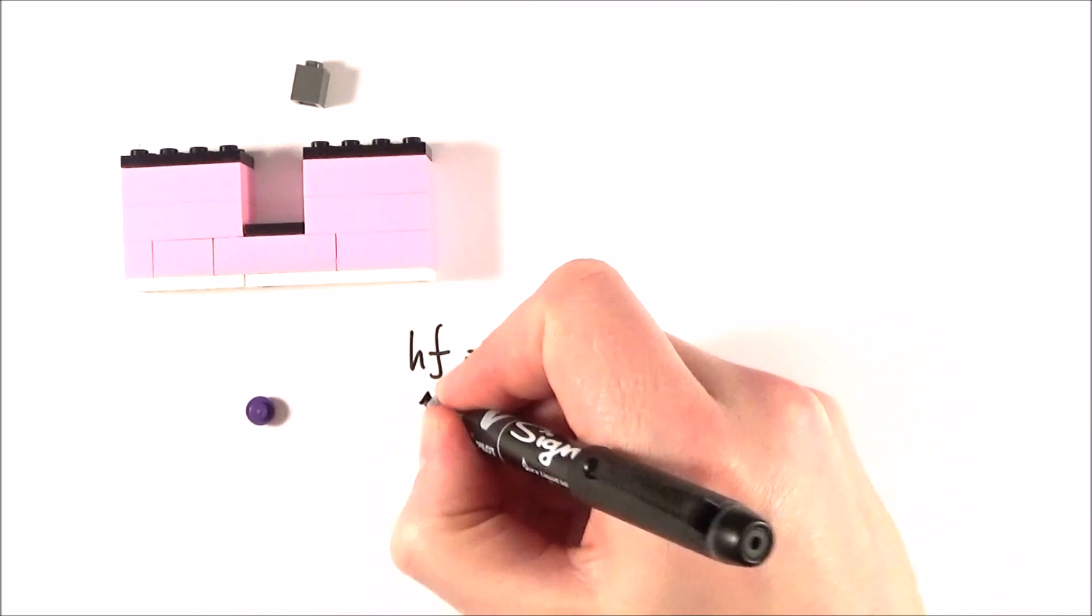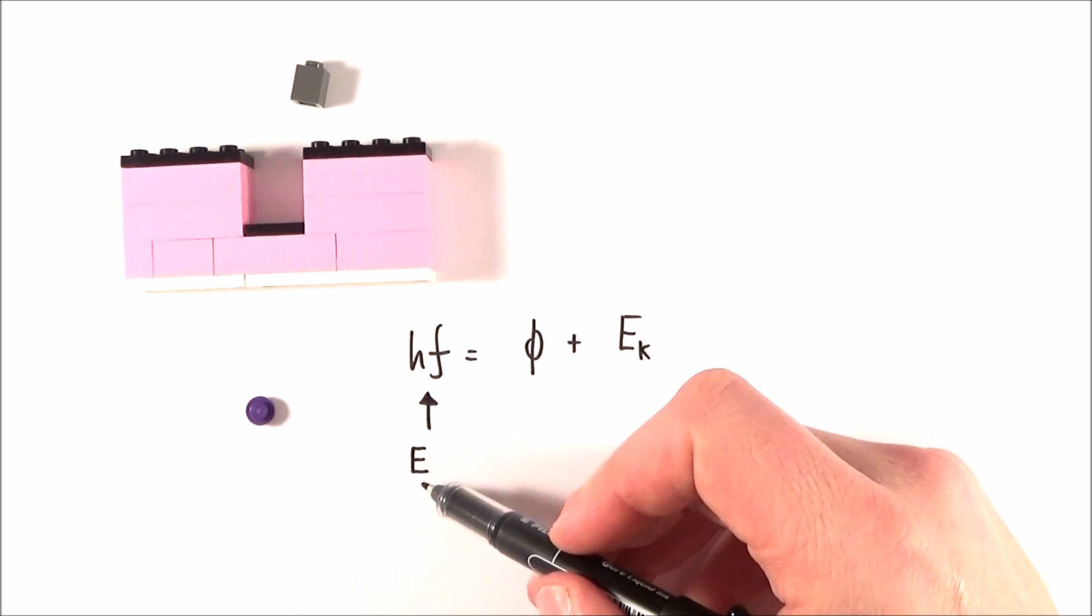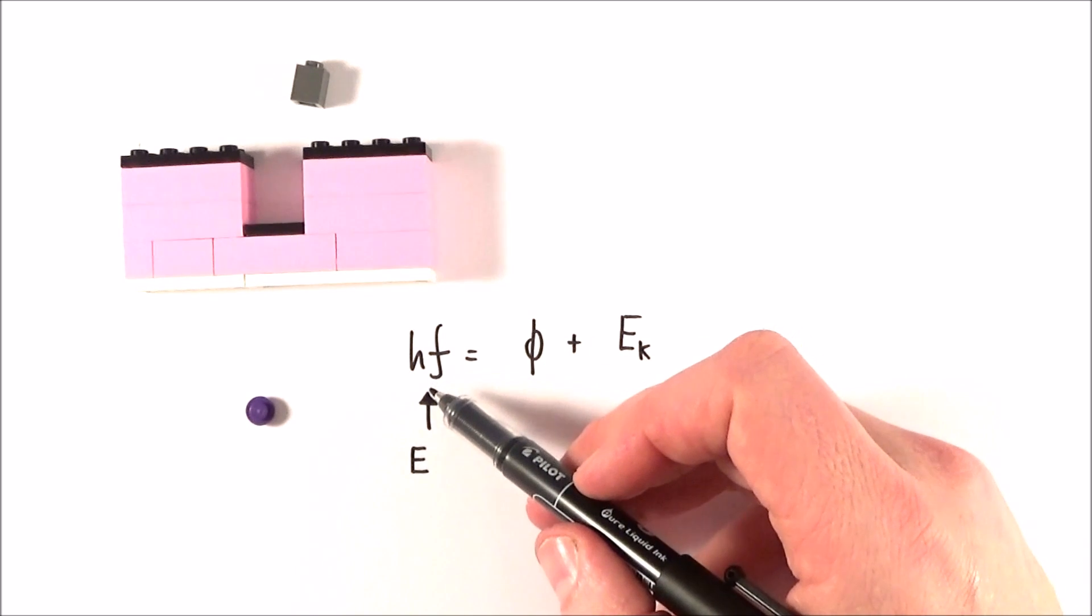Okay, so the first part of the equation, HF, this comes from the fact that we can look at the energy of the photon and relate that to the frequency of the associated wavelength.